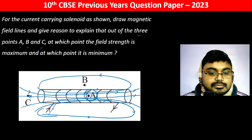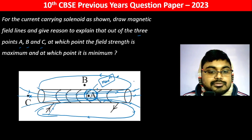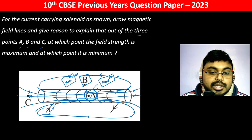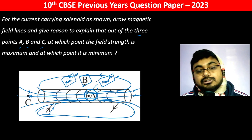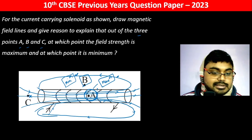At point A, the field strength is maximum. At point B, it is minimum. In fact, inside the solenoid, the magnetic field is almost negligible at point C.